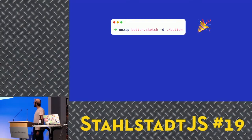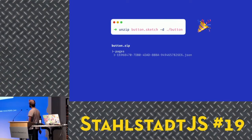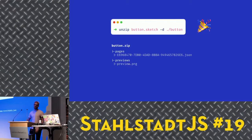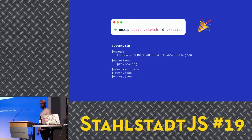In our example, unzipping button.sketch gives us a folder with a button. Inside that folder there's a subfolder with a cryptical page ID — that's like a unique ID in Sketch. Then we get a previews folder with a preview.png — basically the button image as a PNG file. And then we get a document.json, a meta.json, and some user information. That's basically what Sketch needs for its whole file format.